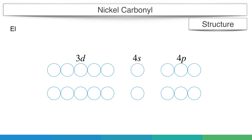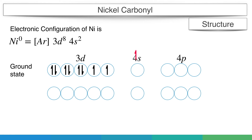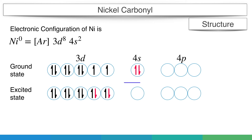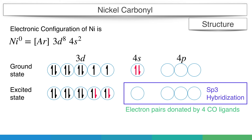Structure: The electronic configuration of nickel is [Ar] 3d8 4s2. At ground state, there are 8 electrons in the 3d orbital and 2 electrons in the 4s orbital. In the excited state, 2 electrons from the 4s orbital shift to the 3d orbital, making available 4 empty orbitals for electrons from ligands. The 4s and 4p orbitals mix to form sp3 hybridized orbitals of the same energy, where 8 electrons from the 4 carbonyl ligands are accommodated.